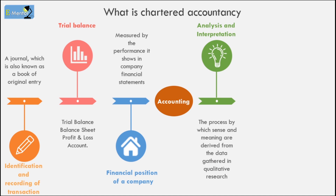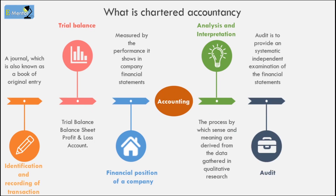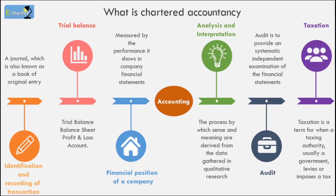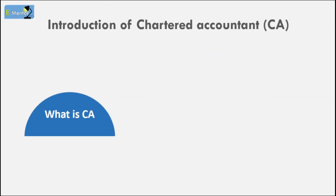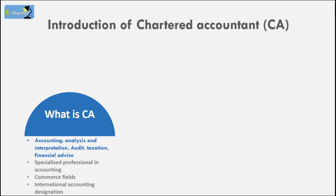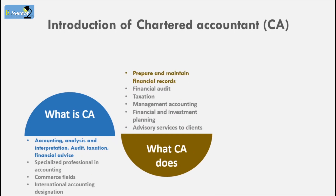On the basis of accounting, analysis and interpretation is done — profit and loss analysis, reasons for profit and loss. This is the work of auditing — if there is any fraud, the auditor will find it out. Accounting basis also includes taxation and financial advice. So what we call a CA is a professional in the accounting and commerce-related field. This is an India-level and internationally recognized designation.